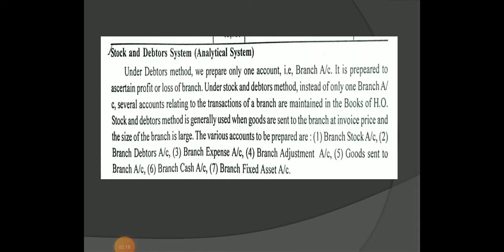The head office will prepare a common account. In the head office, the first account is the branch account for each of those different types of accounts. The second type of account is the stock and debtor system account. We use the stock and debtor system account for large types of enterprises — a big size of business with a huge amount of transactions.